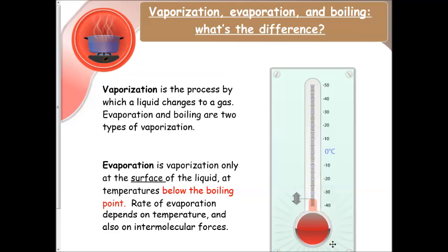Now evaporation is vaporization that only occurs at the surface of a liquid, and it occurs at temperatures below the boiling point, so you don't have to boil water for it to evaporate. The temperature will have an effect on how fast it evaporates, but it will evaporate from the surface constantly.